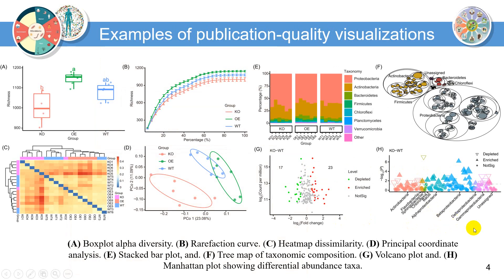Examples of publication-quality visualizations: a. Boxplot alpha diversity. b. Rarefaction curve. c. Heatmap dissimilarity. d. Principal coordinate analysis. e. Stacked bar plot. f. Treemap of taxonomic composition. g. Volcano plot and h. Manhattan plot, showing differential abundance taxa.